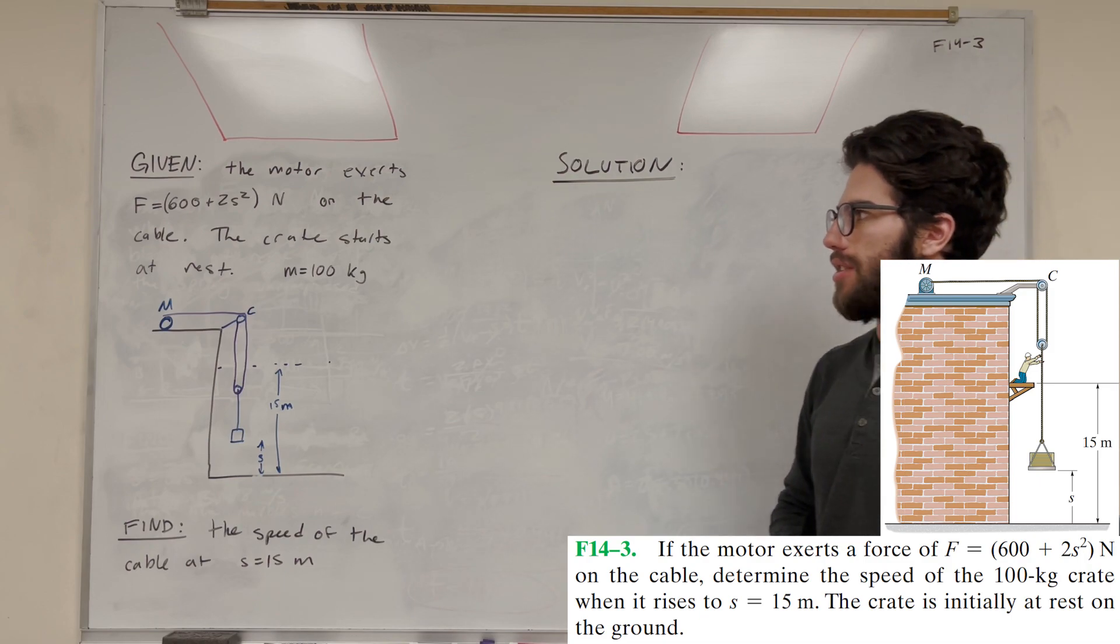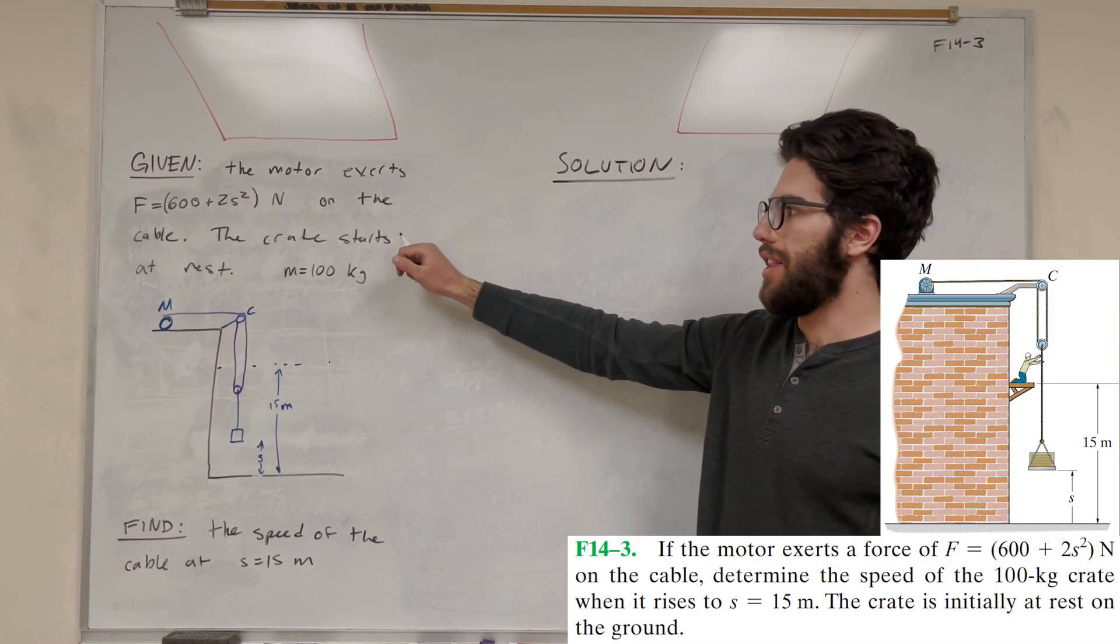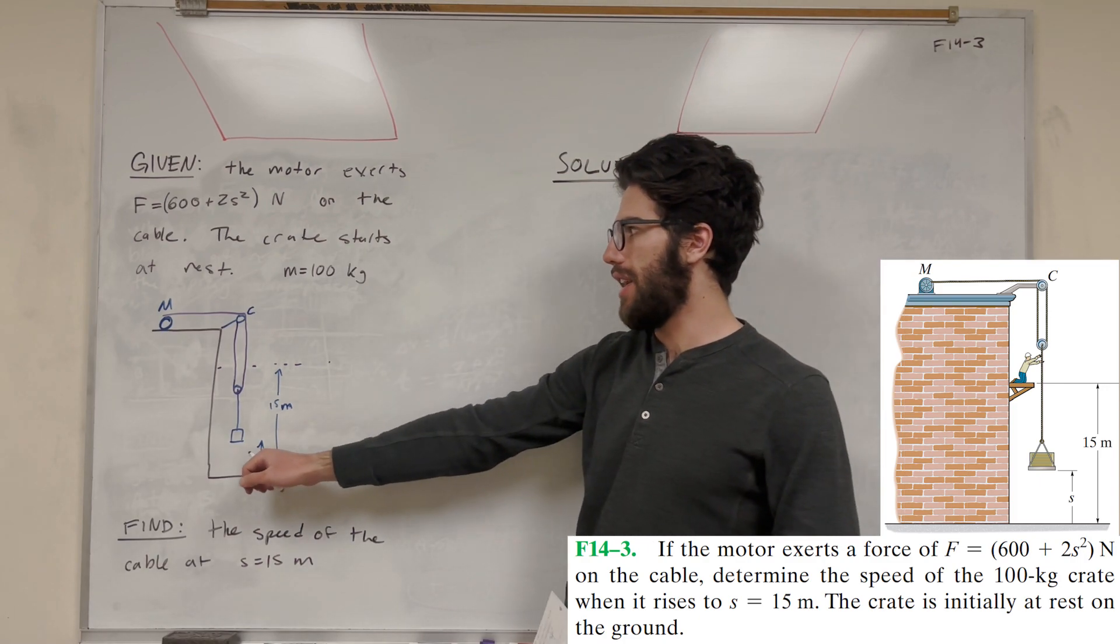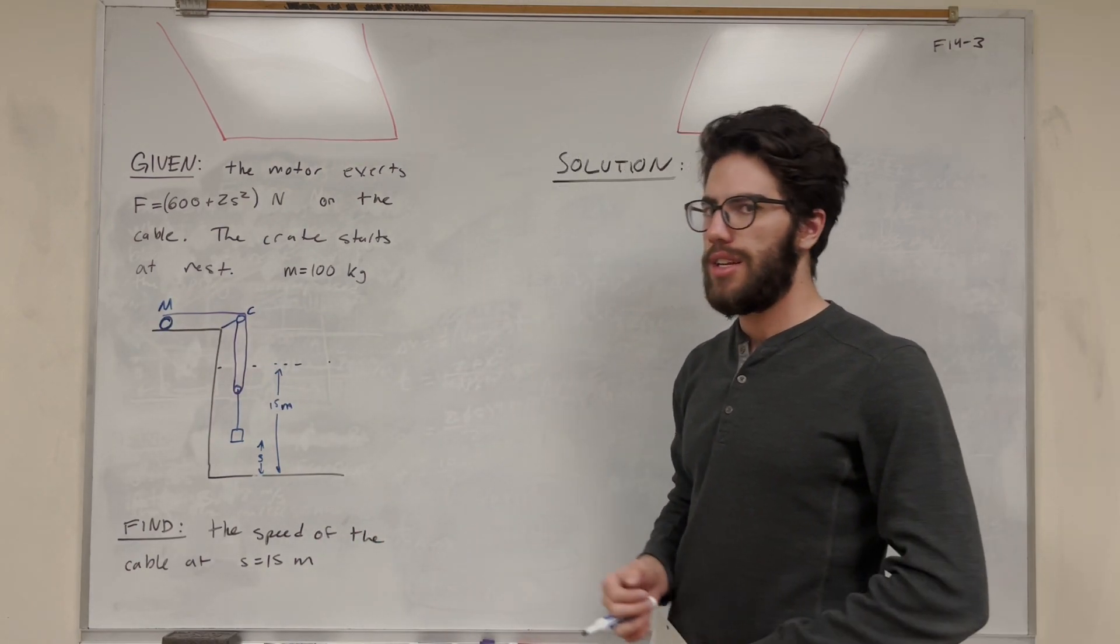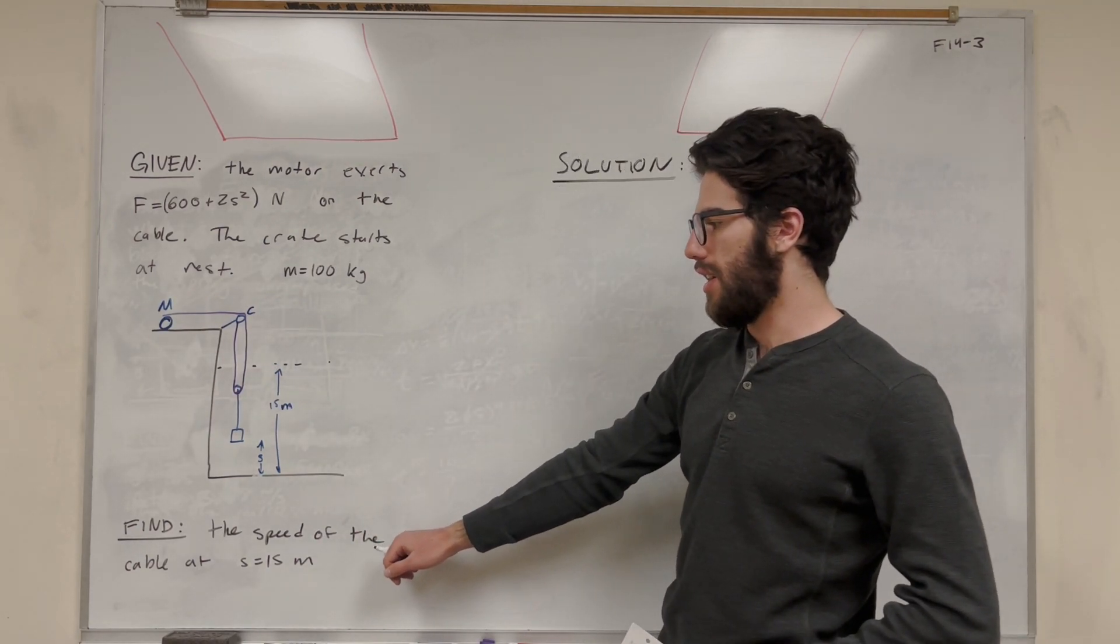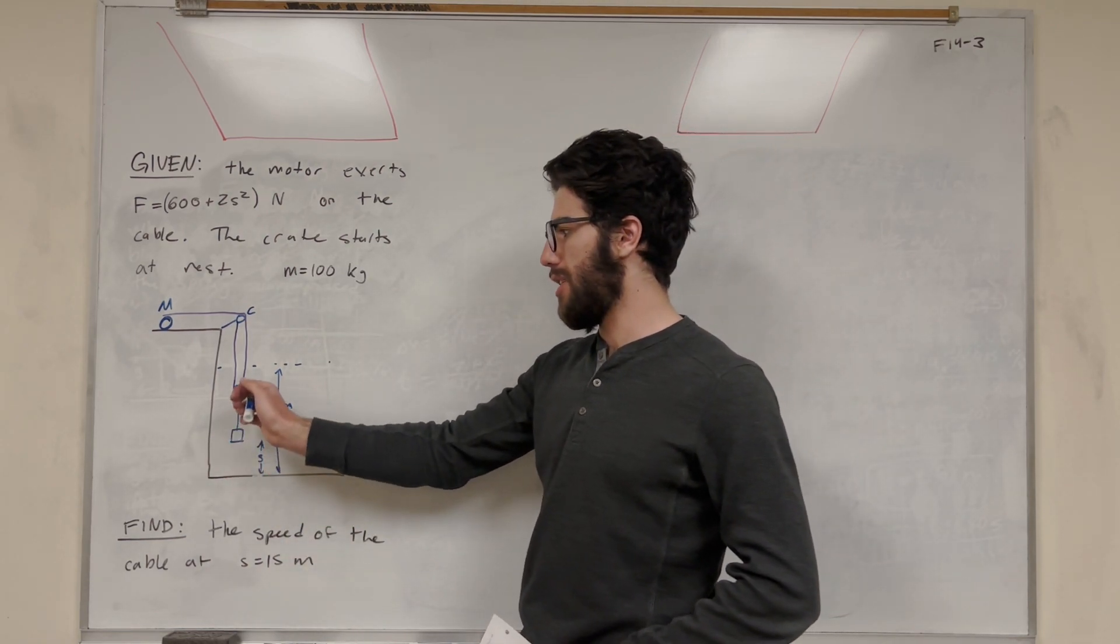So we have a motor, and it's exerting a force that's in terms of position on this cable. So we know that this crate is starting at rest, and we're raising it up with this motor that's pulling that cable back. So we're going to find the speed of that cable, or the crate, when the crate is equal to 15 meters high.